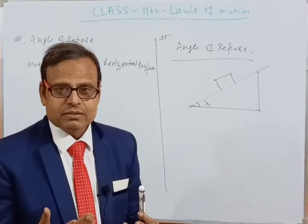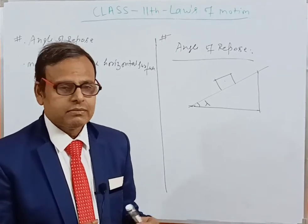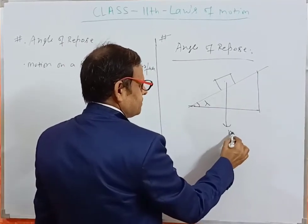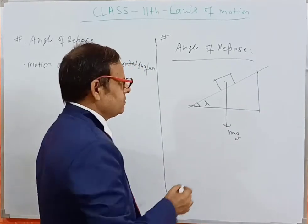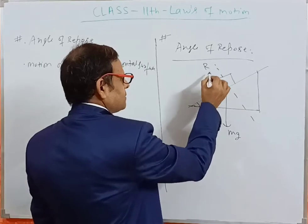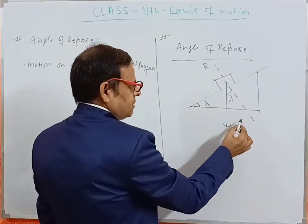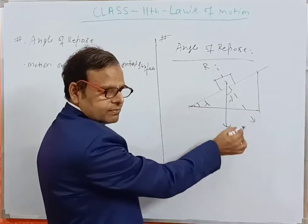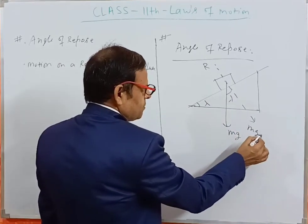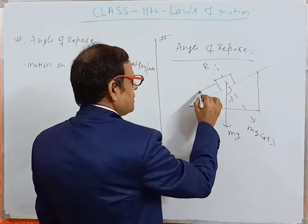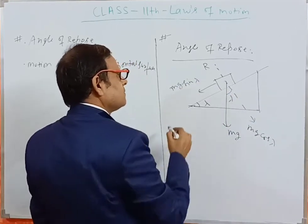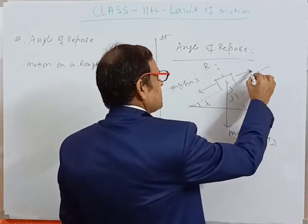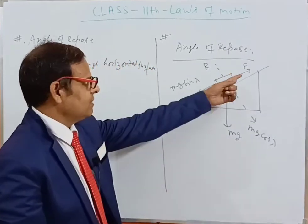Now, what would be the formula or relation for lambda? Let us note it. The weight mg — since mass is m — acts downward. The normal reaction R acts perpendicular to the plane. This angle will also be lambda. The component of mg along the normal to the plane is mg cos lambda, and along the plane downward it is mg sin lambda. The force of friction is the supporting force that will balance the motion downward.